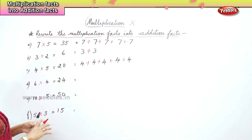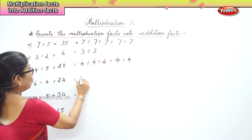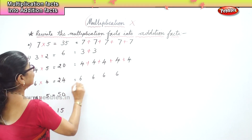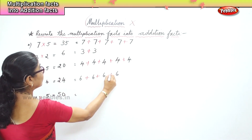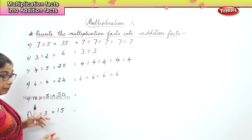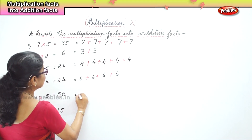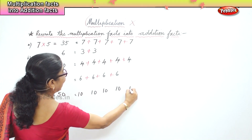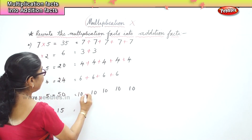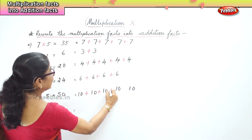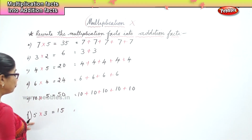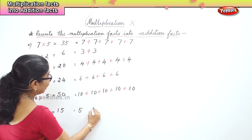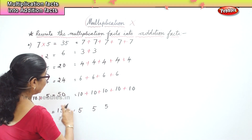Six, how many times? Four times. One, two, three, four. Six four times. And ten, how many times? Five times — one, two, three, four and five. Ten plus ten plus ten plus ten plus ten. Five three times: five plus five plus five.